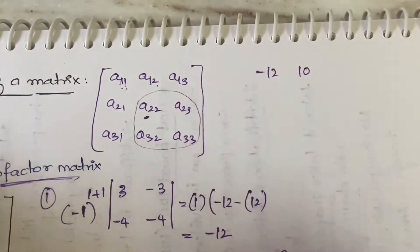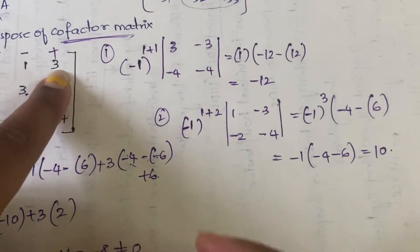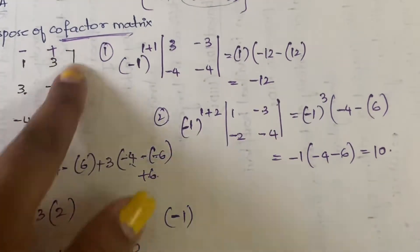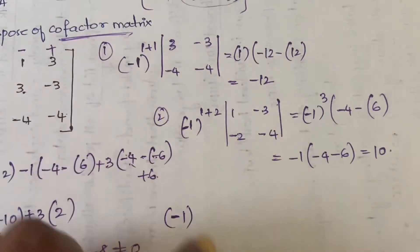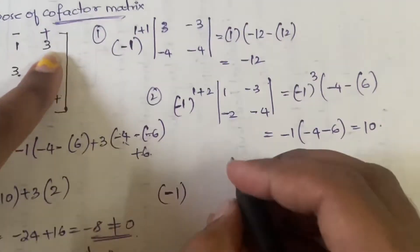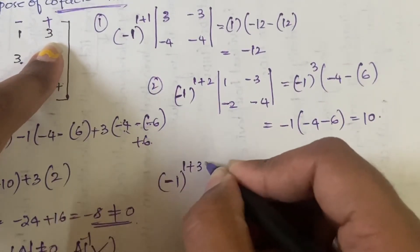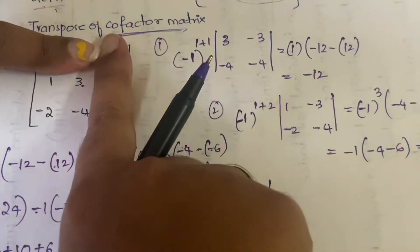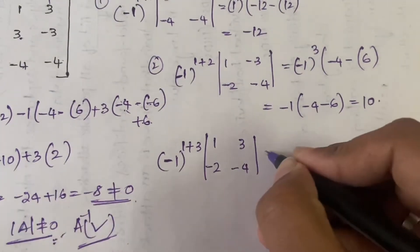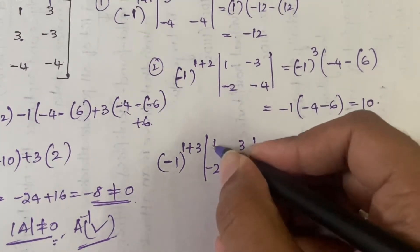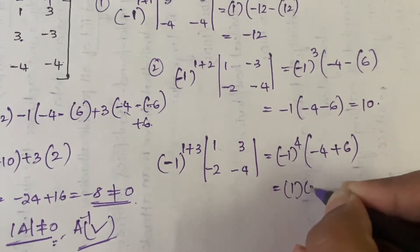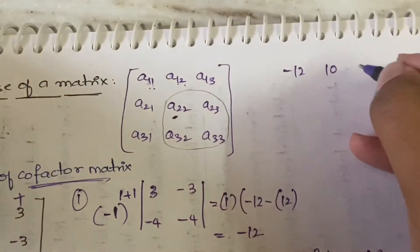The third cofactor element is at position (1,3): (−1)^(1+3) times the 2×2 submatrix with elements 1, 3, −2, −4. That gives (−1)⁴ × (1×(−4) − (−2×3)) = 1 × (−4 + 6) = 1 × 2 = 2. So the third element is 2.